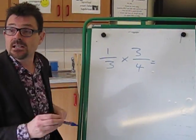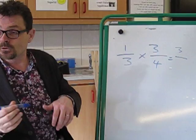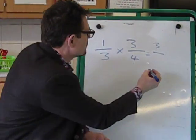So let's do that. 1 times 3 equals? 3. Correct. And 3 times 4 equals? 12. Fantastic.